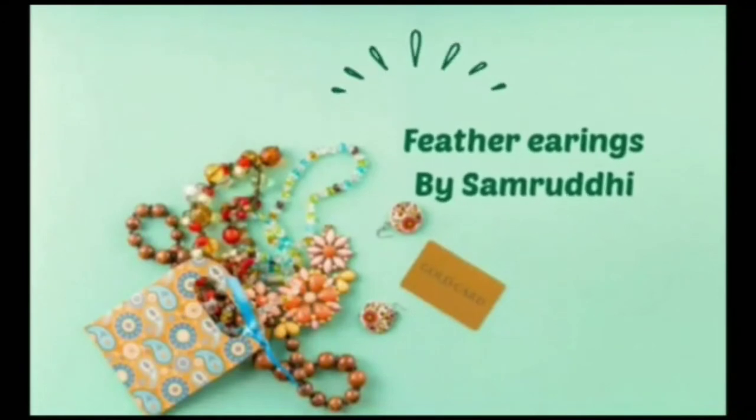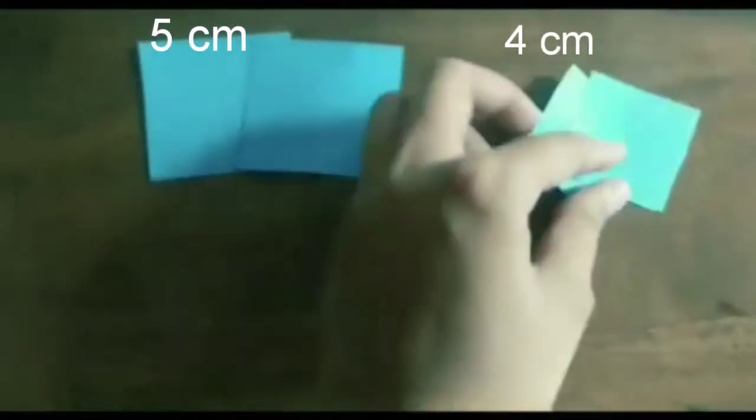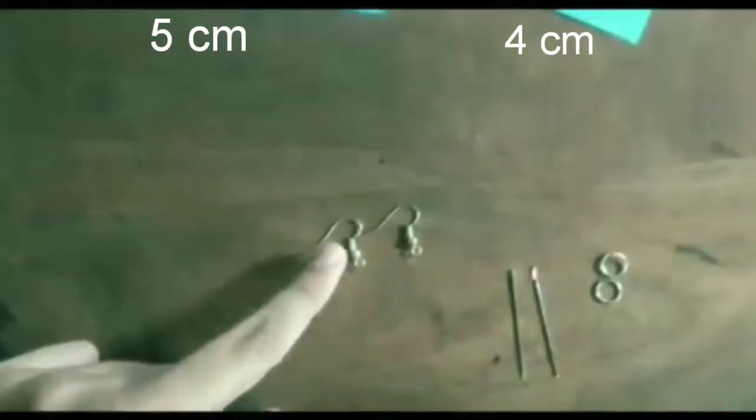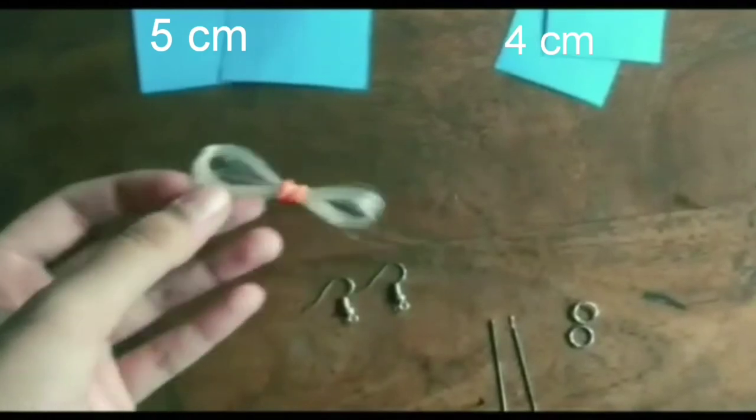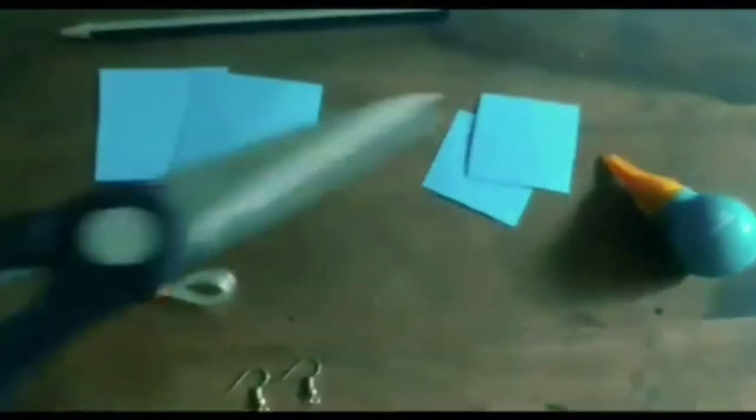Feather earrings by Samruti. You need two 5 by 4 centimeter square sheets, ear hooks, needle, jump rings, elastic, pencil and glue and scissors.